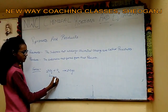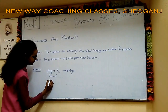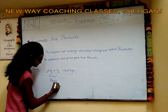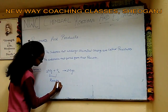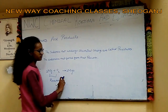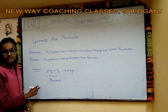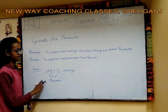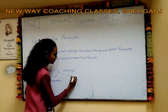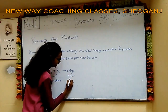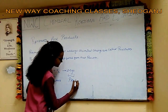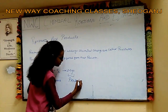Here Mg and O2 are the reactants. This is the reaction — Mg and O2 react together and a new product is formed, which is MgO. This new substance formed is known as the product.